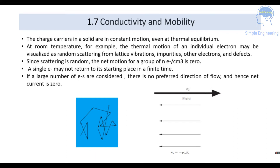Since the scattering is random, the net motion for a group of n electrons is equal to 0. A single electron may not return to its starting place in a finite time. If a large number of electrons are considered, there is no preferred direction of flow and hence the net current is equal to 0.